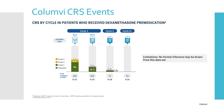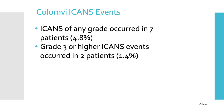Another figure for Columvi shows CRS rates by cycle broken down by grade for patients who received dexamethasone premedication. Most events still occurred in cycle 1, but on cycles 3 and onward, patients who received dexamethasone before their doses had no observed CRS. Regarding ICANS events with Columvi, ICANS of any grade occurred in 7 patients — 4.8% — and grade 3 or higher ICANS occurred in just 2 patients, or 1.4% of the population.